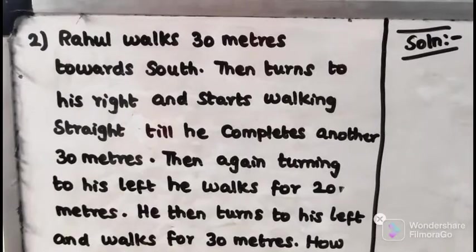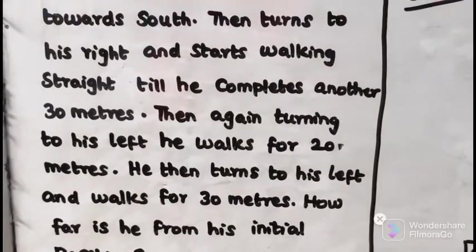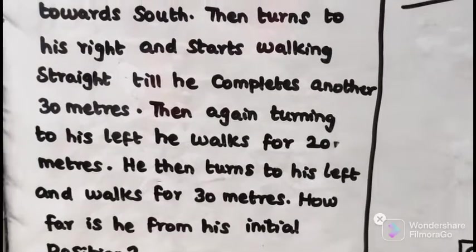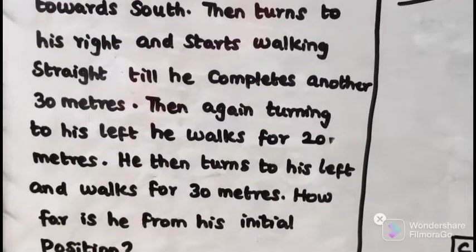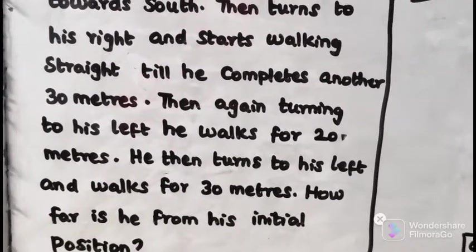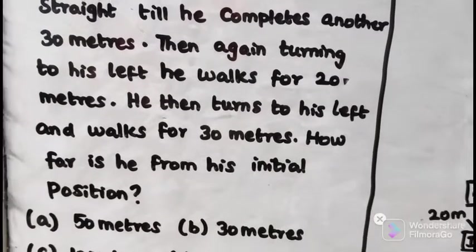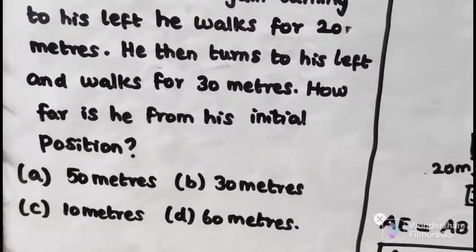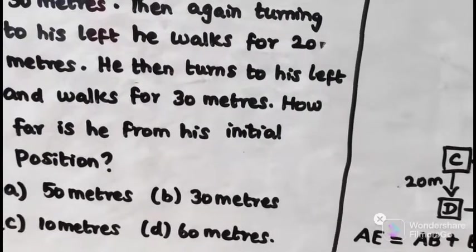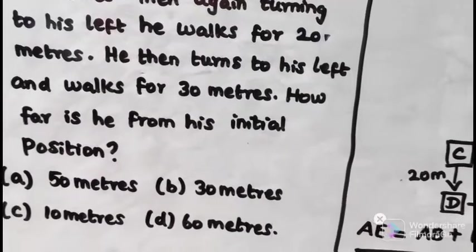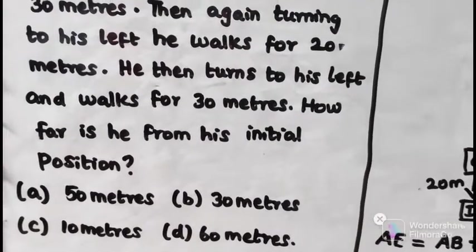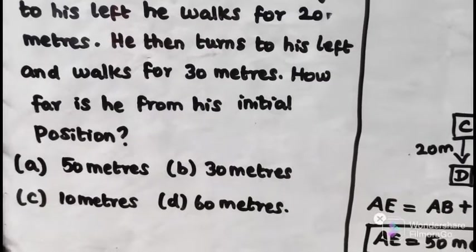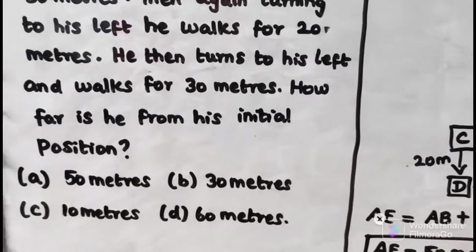Second problem: Rogul is walking towards south, then turns to his right and walks 30 meters. Then again turns to his left and walks for 20 meters. He then turns to his left and walks for 30 meters. How far is he from his initial point? Options: A is 15 meters, B is 30 meters, C is 10 meters, D is 60 meters.